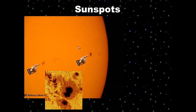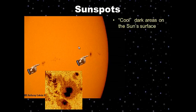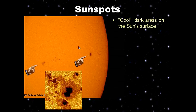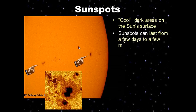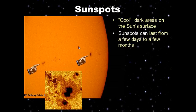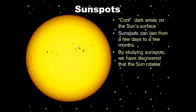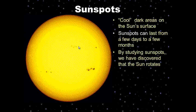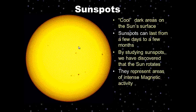Sunspots are cool, dark areas on the Sun's surface. When I say cool, they're still thousands of degrees Celsius — they're just cooler compared to the surrounding portion of the Sun. Sunspots can last from a few days to a few months. By studying sunspots, we've discovered that the Sun rotates in place. They represent areas of intense magnetic activity.